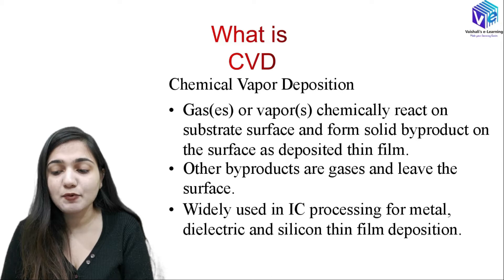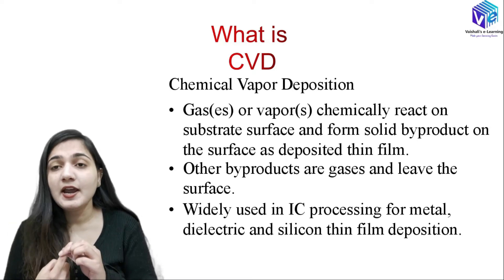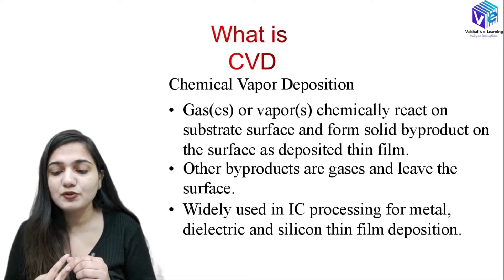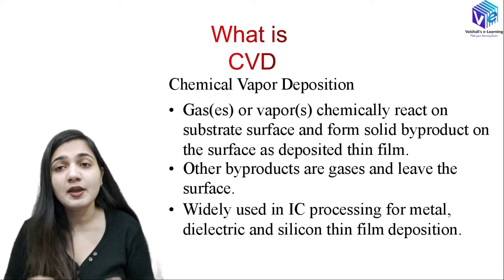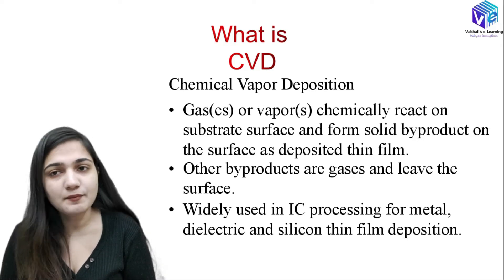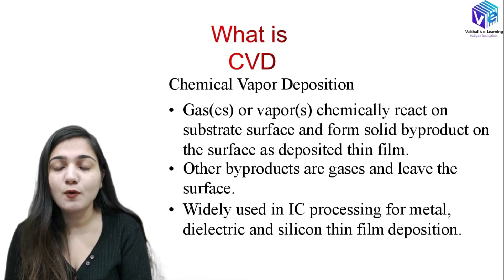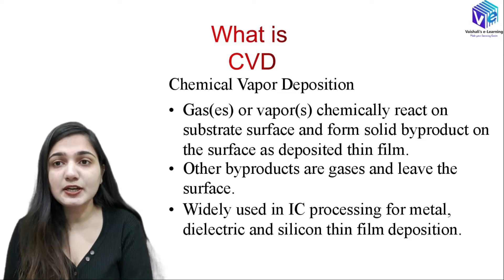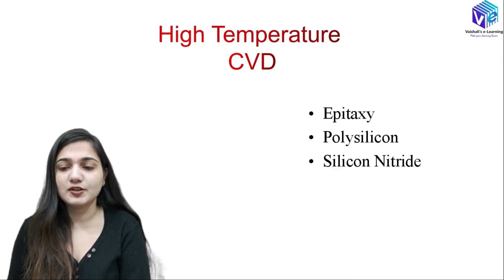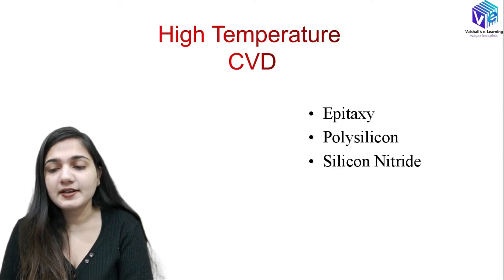Chemical vapor deposition is widely used in IC processing for metal, dielectric, and silicon thin film deposition. For all three — metal deposition, dielectric deposition, and silicon thin film deposition — we are using CVD or the high temperature thermal deposition process. If I talk about high temperature CVD, I can classify it as epitaxy, polysilicon, or silicon nitride.